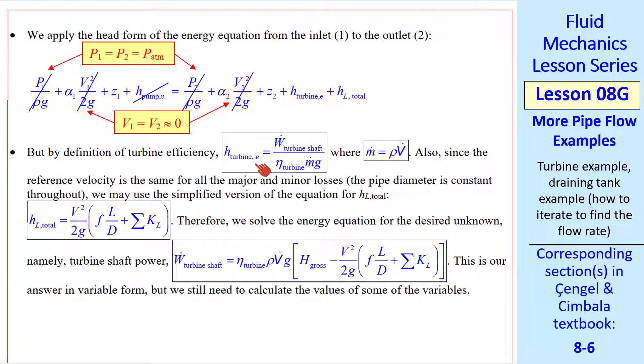From a previous lesson we have this definition of turbine efficiency. H turbine extracted is W dot of the turbine shaft, the shaft power, divided by the turbine efficiency, M dot G. Since we're given a volume flow rate, M dot is rho V dot. Since pipe diameter is constant throughout, we use this simplified version of the HL total equation. So solving for H turbine E and then for W turbine shaft, we get this equation, which is our answer in variable form. And we know most of these parameters, except we have to do a little bit of work to find V, F, and sigma KL.